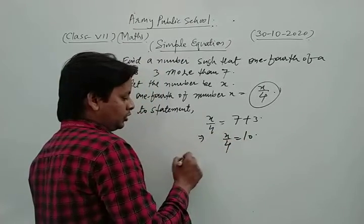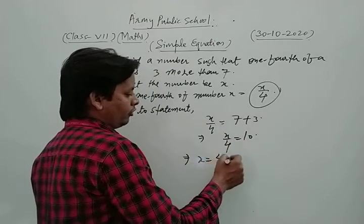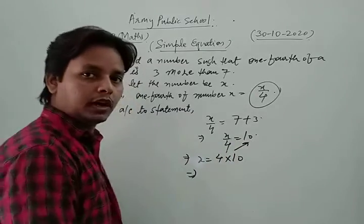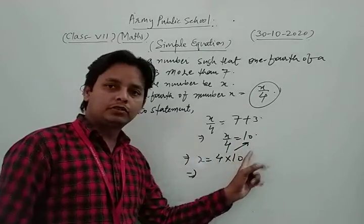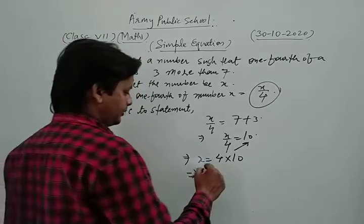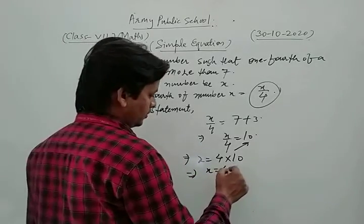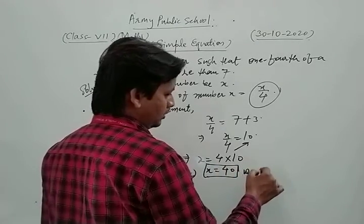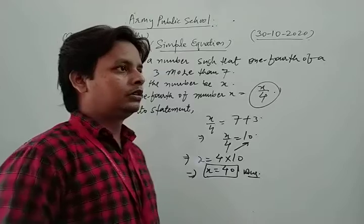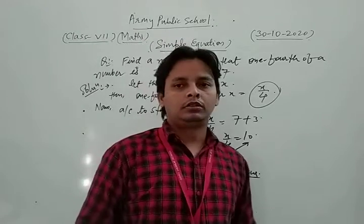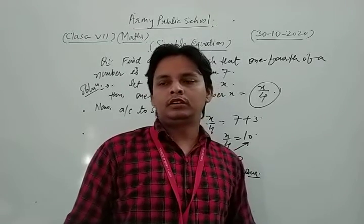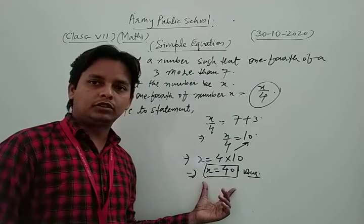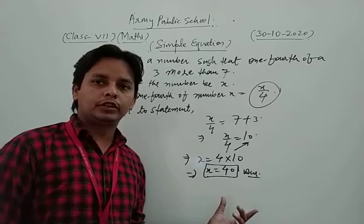We simplify to find x. We do cross multiplication: x is equal to 4 into 10, which is 40. This is our required solution. This is one of the most important questions of your NCERT exercise.